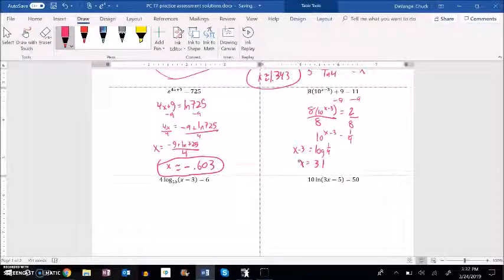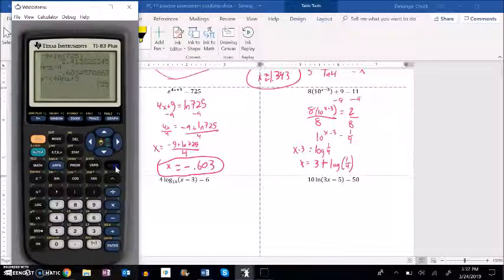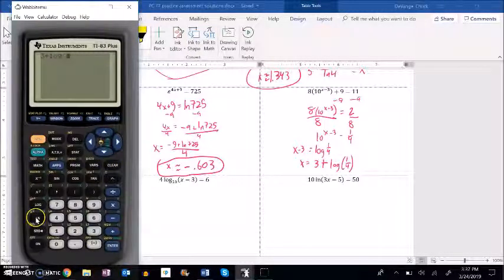So I have 3 plus whatever log of 1 fourth or 0.25 is. Grab my calculator and I have 3 plus log of 1 fourth.